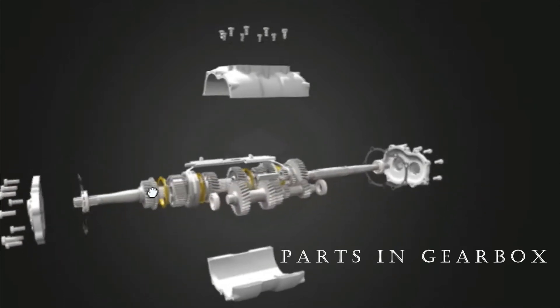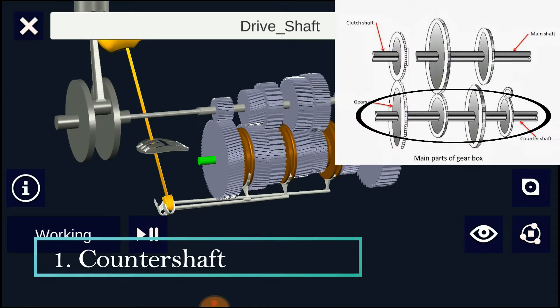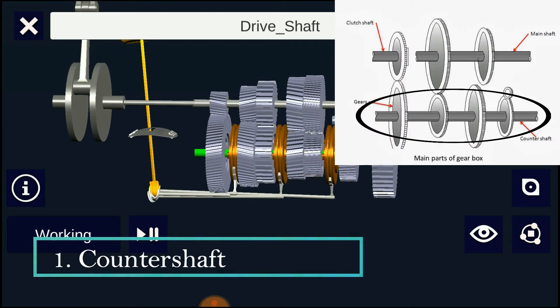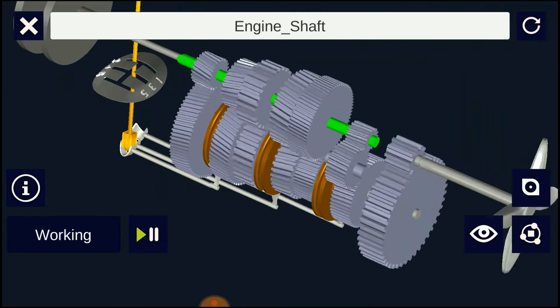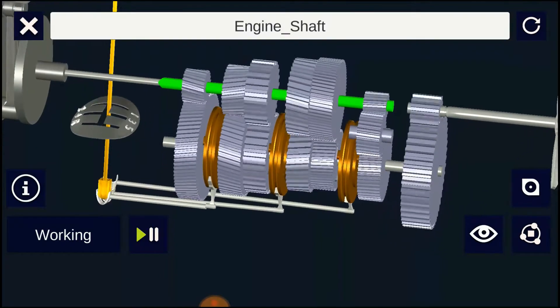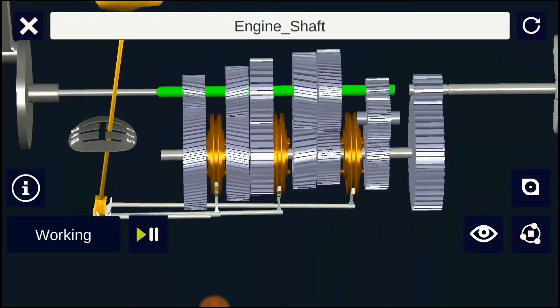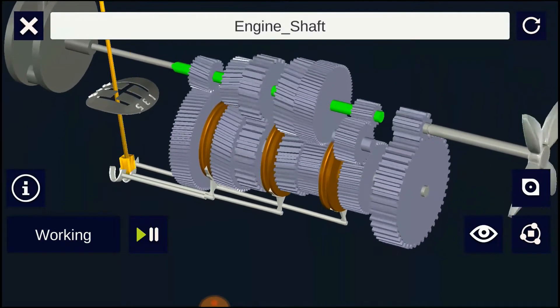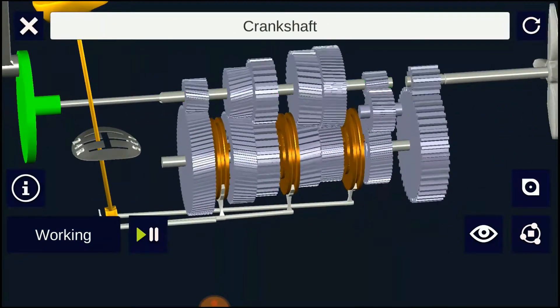Counter shaft is a shaft which connects with the clutch shaft directly. It contains the gear which connects it to the clutch shaft as well as the main shaft. It may run at the engine speed or at lower than engine speed according to gear ratio.